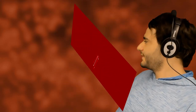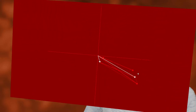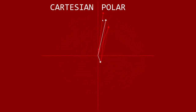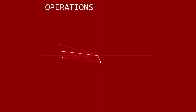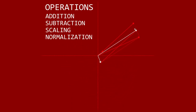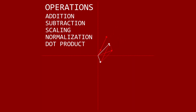Today I'll teach you about 2D vectors by coding in JavaScript. You'll learn to use both the Cartesian and Polar representations, and do vector operations like addition, subtraction, scaling, normalization, and how to calculate a dot product.